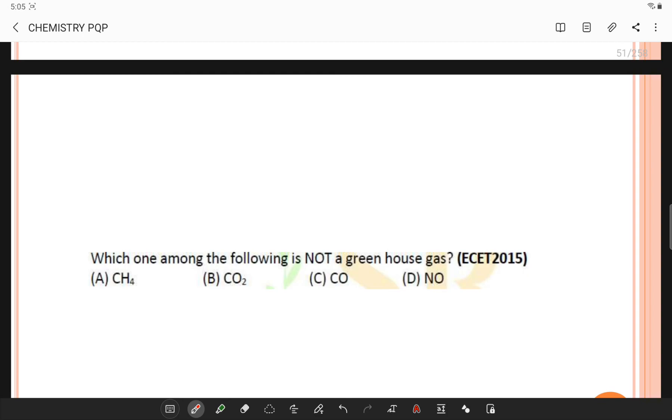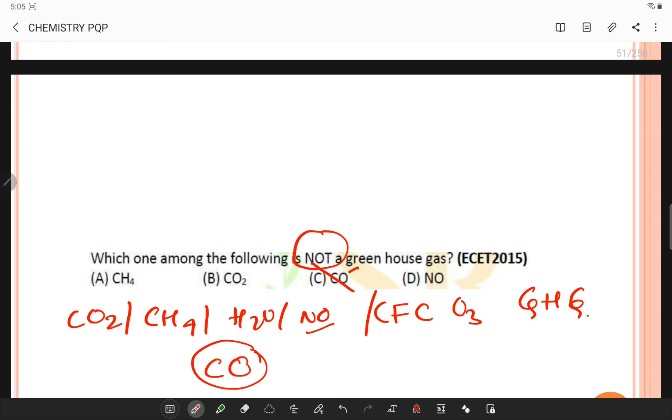Which one among the following is not a greenhouse gas? Generally carbon dioxide, methane, water vapor, nitrous oxides, chlorofluorocarbons, and ozone are greenhouse gases, but carbon monoxide is not a greenhouse gas.